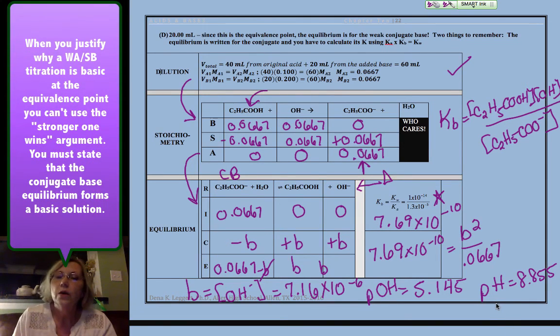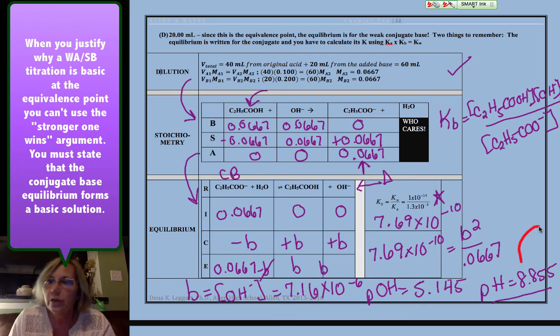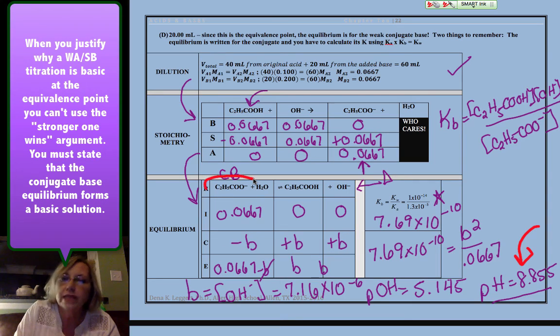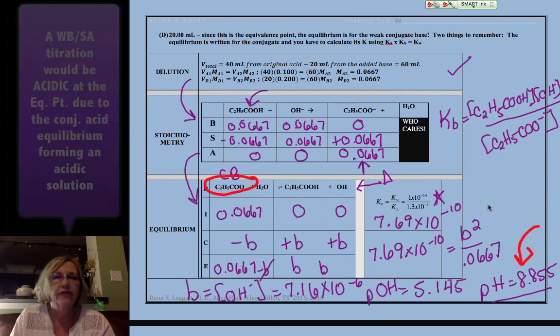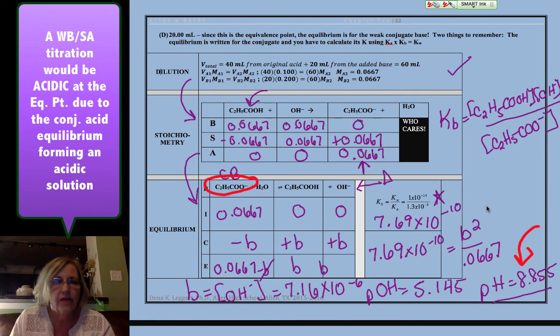Okay, so this is my pH at my equivalence point. So the reason, and you should be able to justify this, the reason the pH at the equivalence point is basic is because the only thing present at the equivalence point is that weak conjugate base. Okay, so you want to make sure that you have that concept down very well. You will need to justify that.